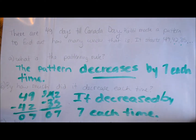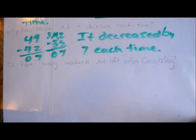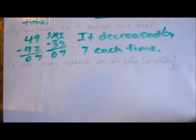There's one last part to this question. It asks: how many weekends are left before Canada Day? Now that we've figured out the patterning rule, we use it to find the answer. If every week has a weekend, we're really just figuring out how many weeks are left — it's the same thing. You can keep subtracting 7 every time until you get down to no days left, but it's easy with a chart.